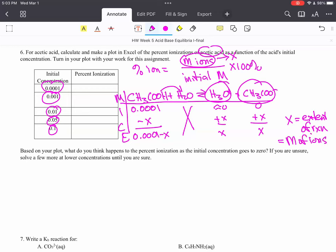So the percent ionization is going to be that molarity of ions, that X value over your initial concentration times 100%. Do that for all five of them. So five ICE tables. Plot it and turn it in.